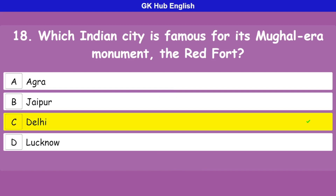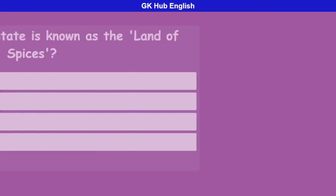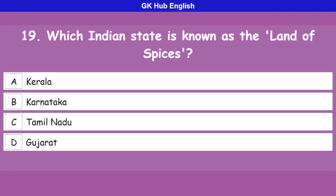Question 19: Which Indian state is known as the land of spices? Option A is Kerala, option B is Karnataka, option C is Tamil Nadu, option D is Gujarat. Correct answer is Kerala.